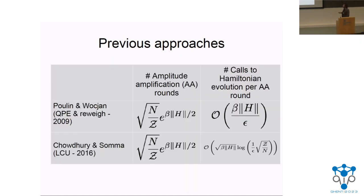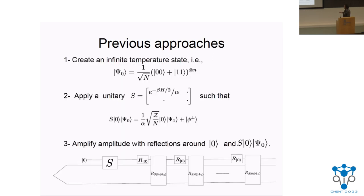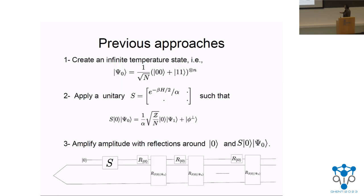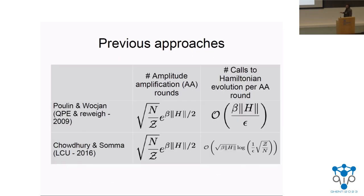We can understand the two previous papers along these lines. This quantity is the square root of the ratio of partition functions, which is basically the inverse of this amplitude, and this is the inverse of one over alpha — so alpha in these settings gives the number of amplitude amplification rounds needed. Each amplitude amplification round calls Hamiltonian evolution with respect to the Hamiltonian itself, which is not the bottleneck of the algorithm, and can be done efficiently.